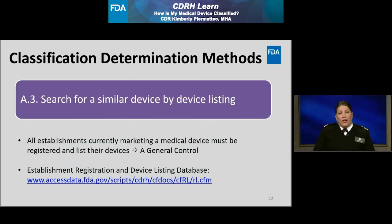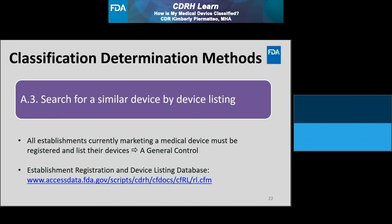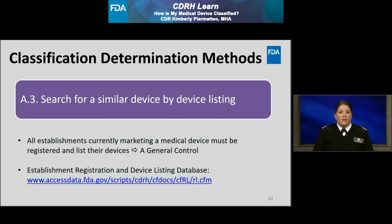The third method I recommend is to search for a similar device by device listing. This method is useful when determining how a currently marketed device is classified, because establishment registration and device listing are a general control — meaning all medical device establishments currently marketing a device in the United States must be registered with FDA and list their devices. So if you know of a similar device currently being marketed, you can search for it by its listing and see if the same product classification applies to your device.